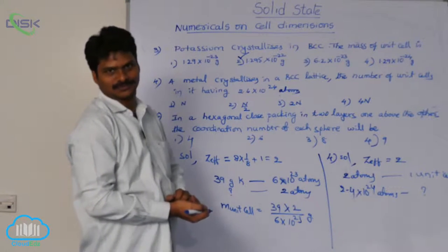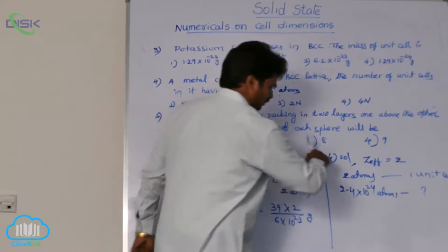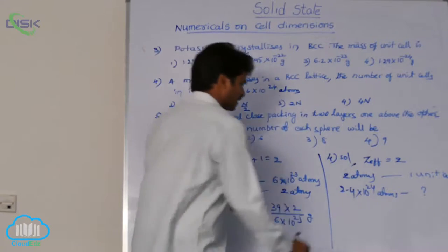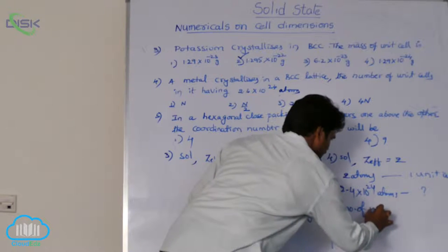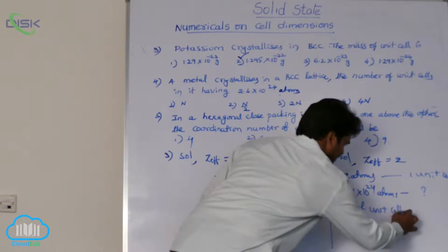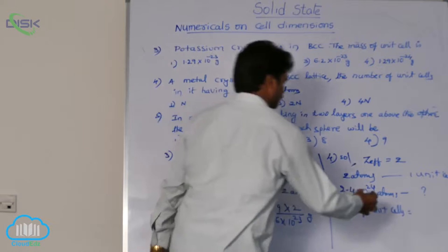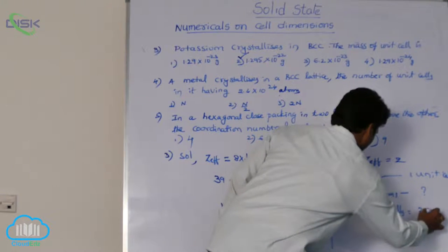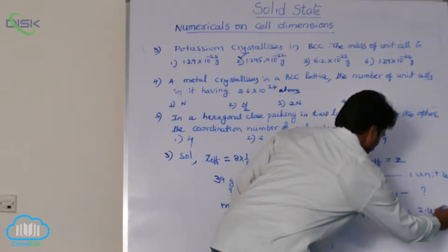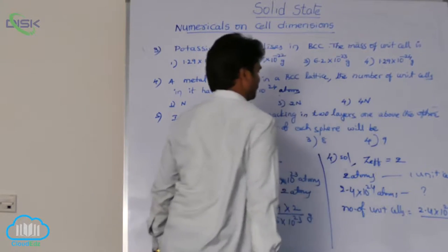How to solve it? Simply cross multiplication. Number of unit cells equal to 2.4 into 10 power 24 by 2.